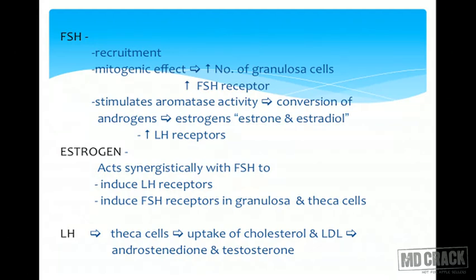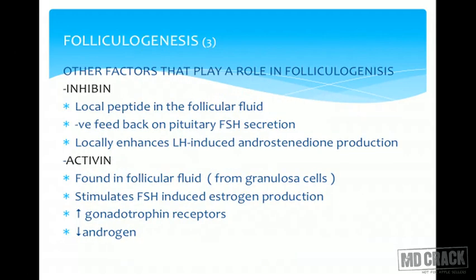FSH has a mitogenic effect — it increases the number of granulosa cells, increases FSH receptors, and stimulates aromatase activity, converting androgens into estrogens. Naturally occurring estrogens are estrone and estradiol, and they increase LH receptors. Estrogen acts synergistically with FSH to induce LH receptors and FSH receptors in granulosa and theca cells. LH acts on theca cells for uptake of cholesterol and LDL, forming androstenedione and testosterone, which are then aromatized to form estrogen.